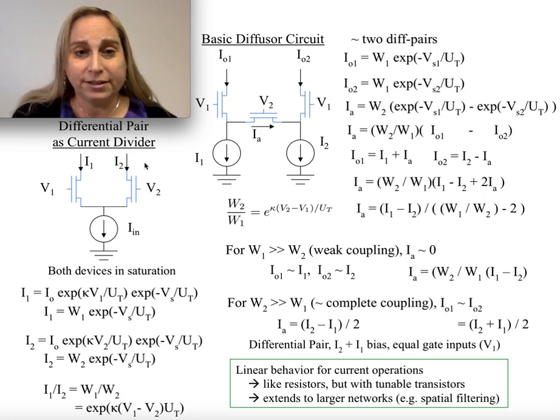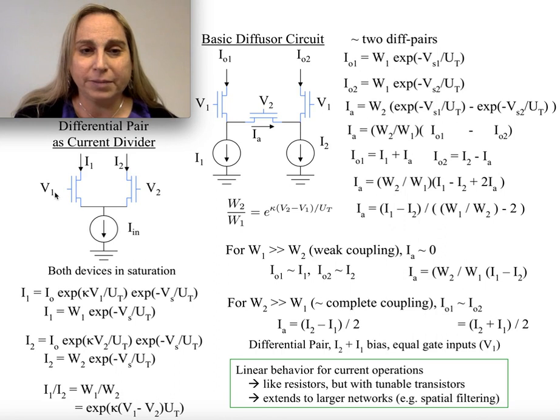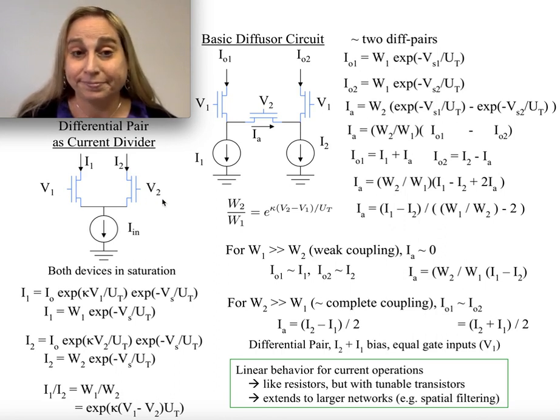If you take a look at a differential pair, it turns out that one way to think about this is as a current divider. And this is quite an interesting process and approach. You might say, well, imagine I have two voltages, V1 and V2, that I'm keeping fixed. Normally, we talk about differential pair of having inputs on V1 and V2 and having a fixed bias current.